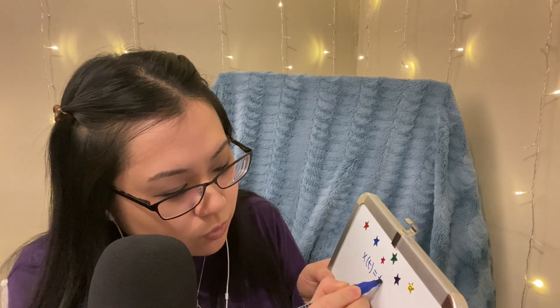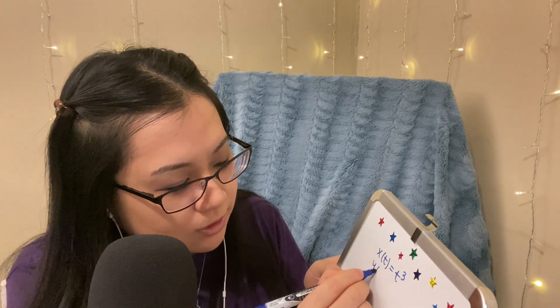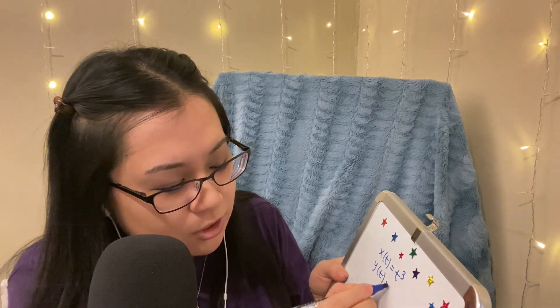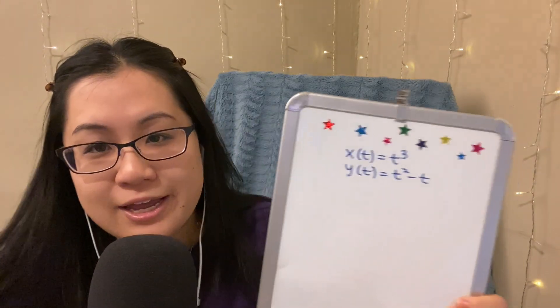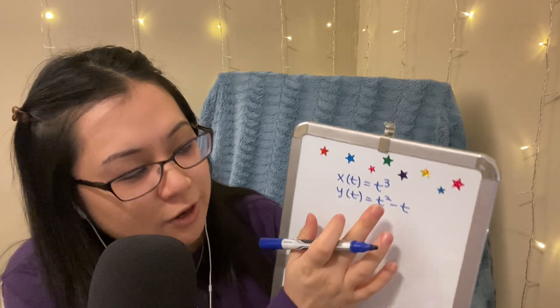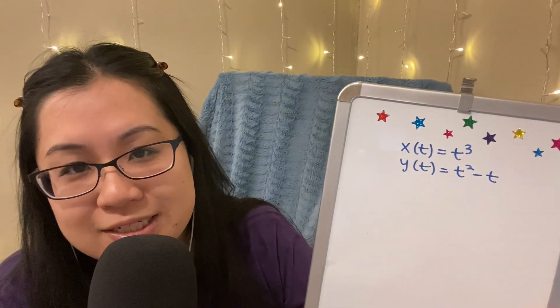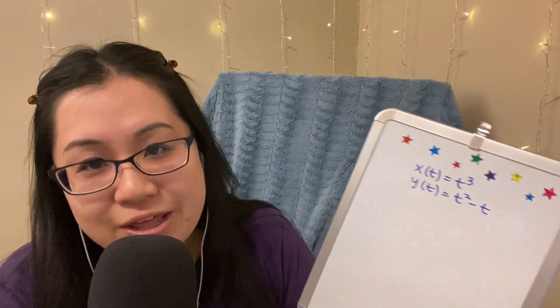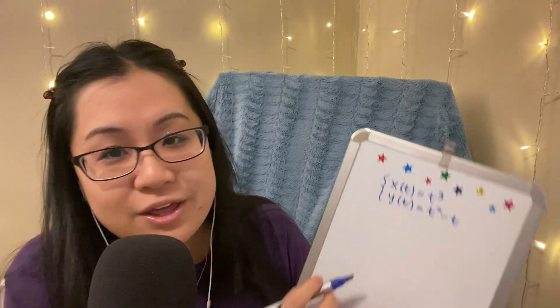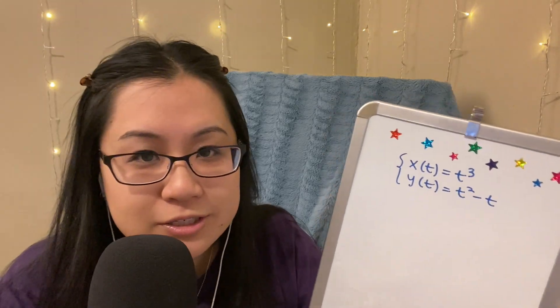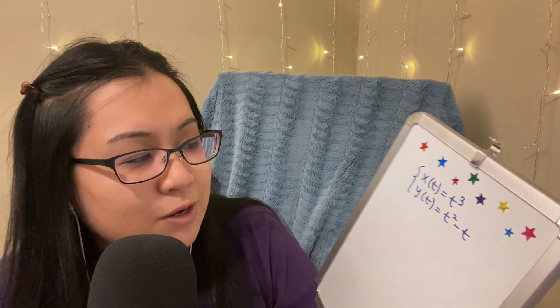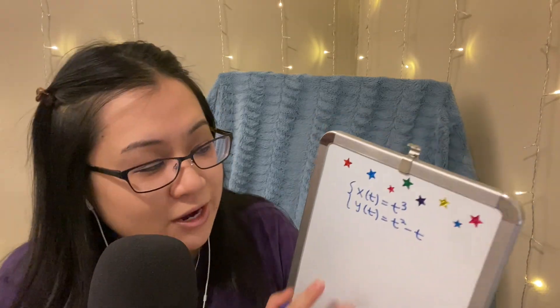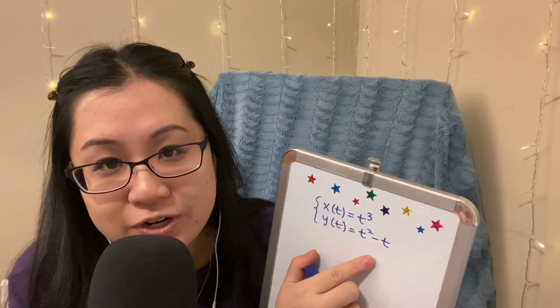So let's start by going over what a parametric curve even is and let's look at this more intuitively. Let's look at an example — I'm just going to make one up. So I have x of t equals t cubed, y of t equals t squared minus t. Together, these make up a parametric curve.